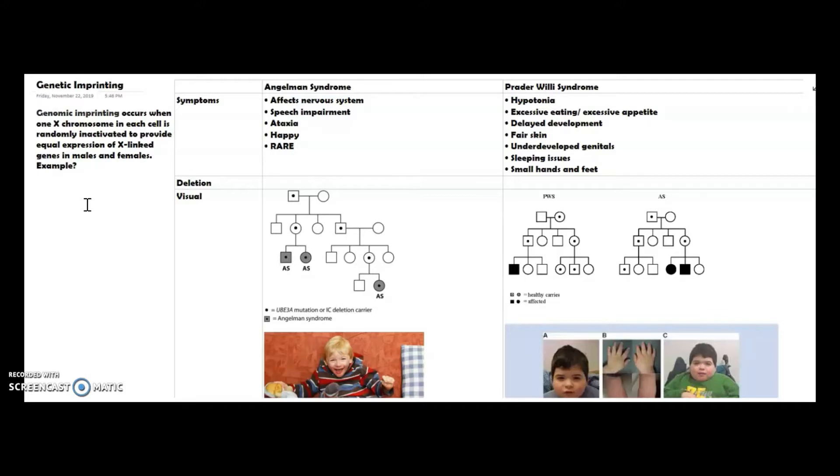We need equal expression from male and female. So what happens is we have something called genomic imprinting that comes in and silences one of the X's for the female and the Y for the male, so male and female both have one X. That's what genomic imprinting is.